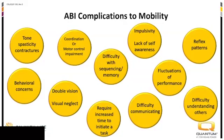All of these complications can lead to difficulties with mobility — whether the person served is walking, using a manual wheelchair, or using power mobility, which is what we're going to talk about today. Just because somebody might have one or more impairments doesn't mean they're not a candidate for power mobility. As a therapist in an inpatient rehab facility, impulsivity might be a red flag, but there are so many different options that can help mediate those issues.